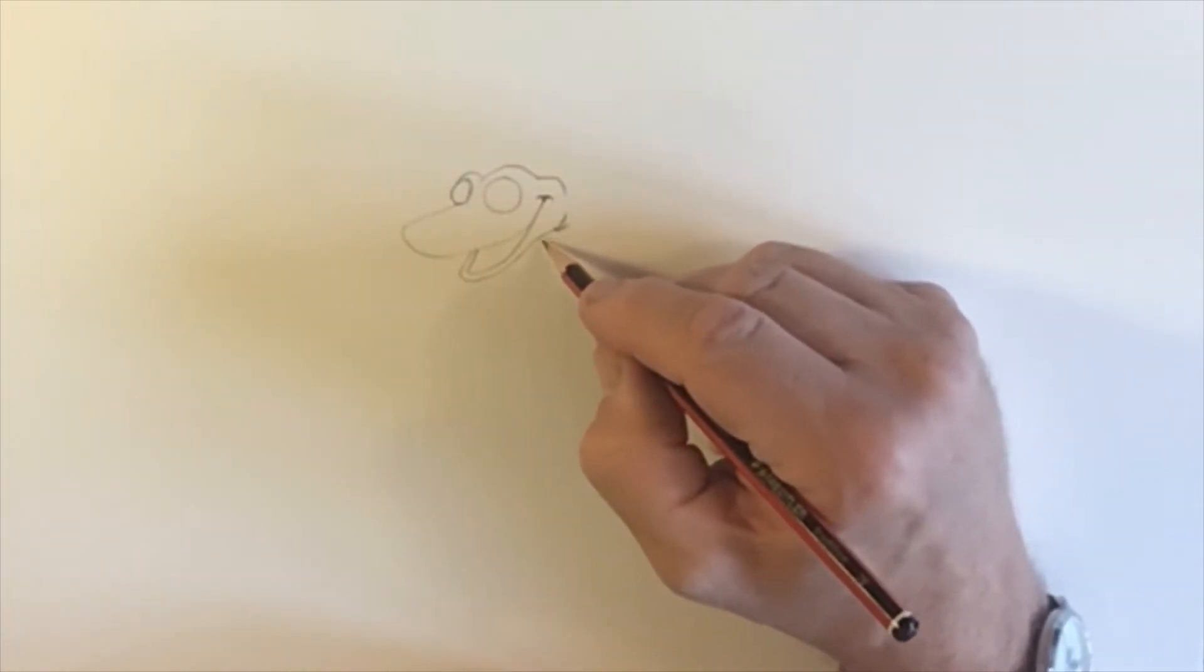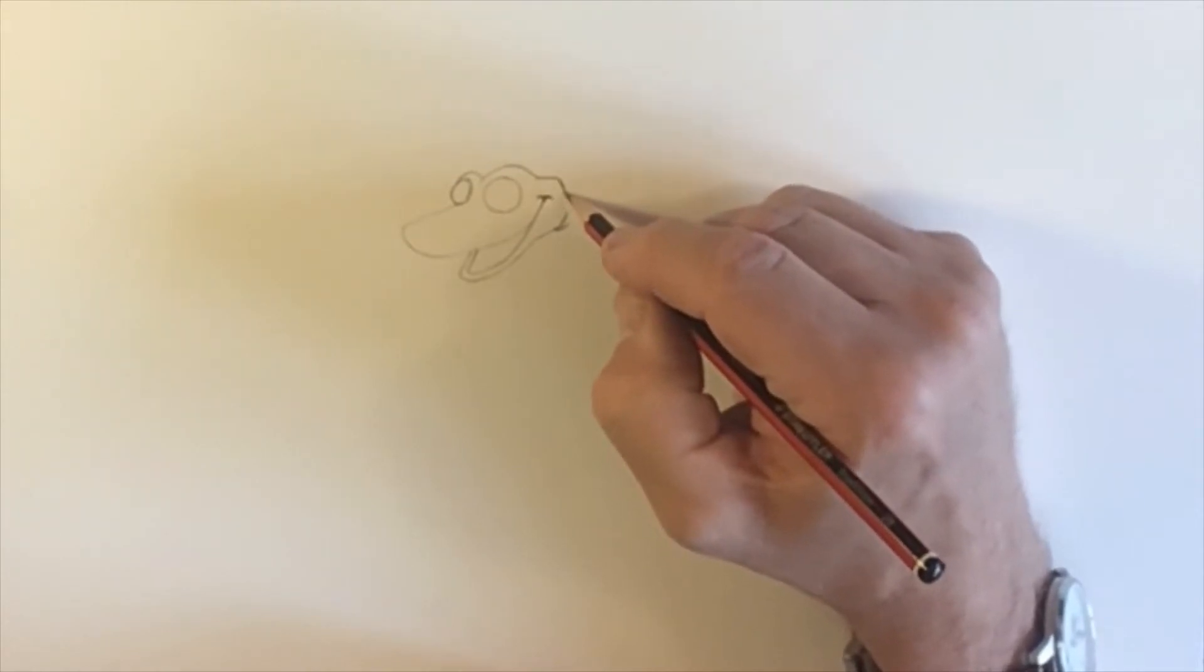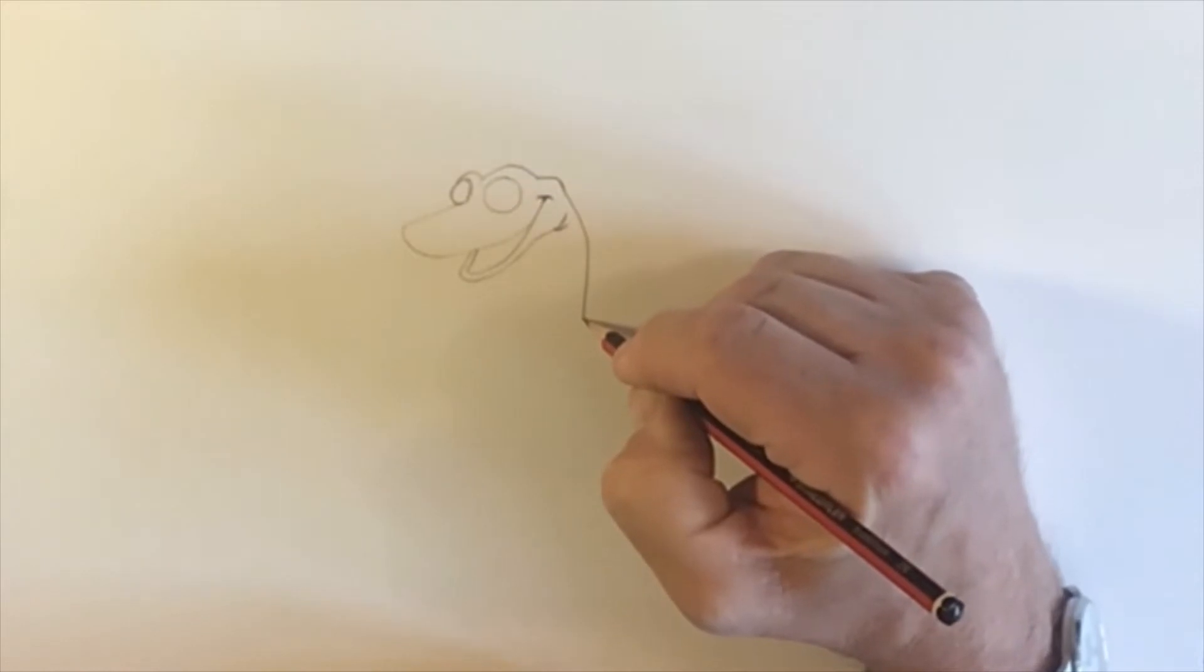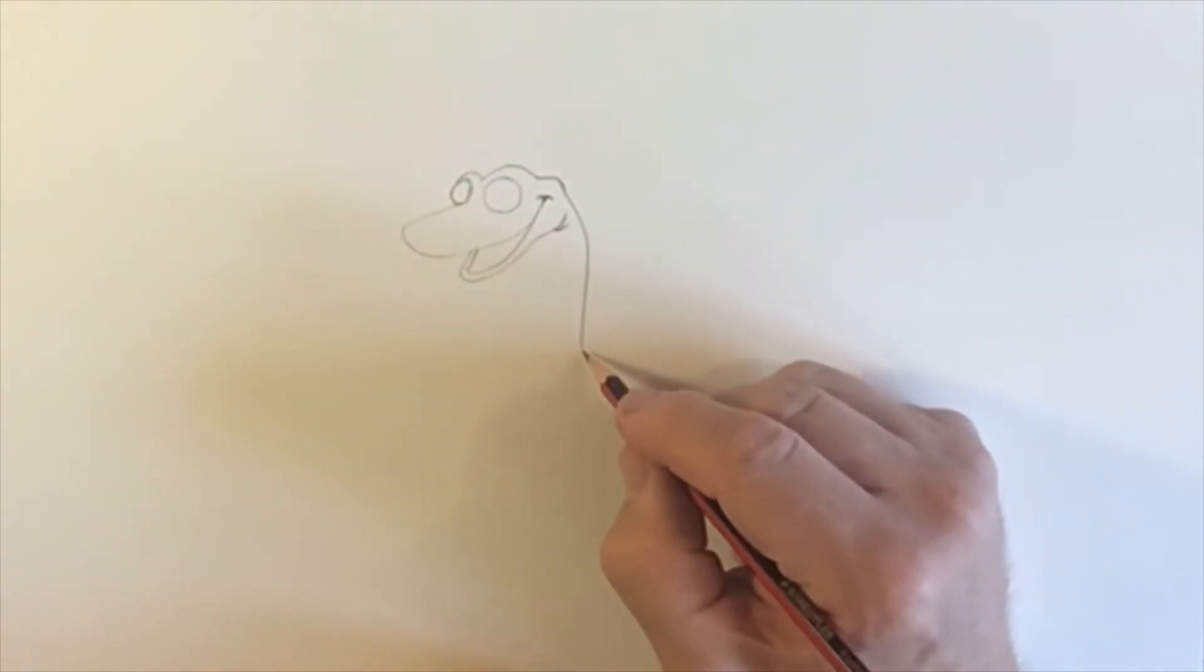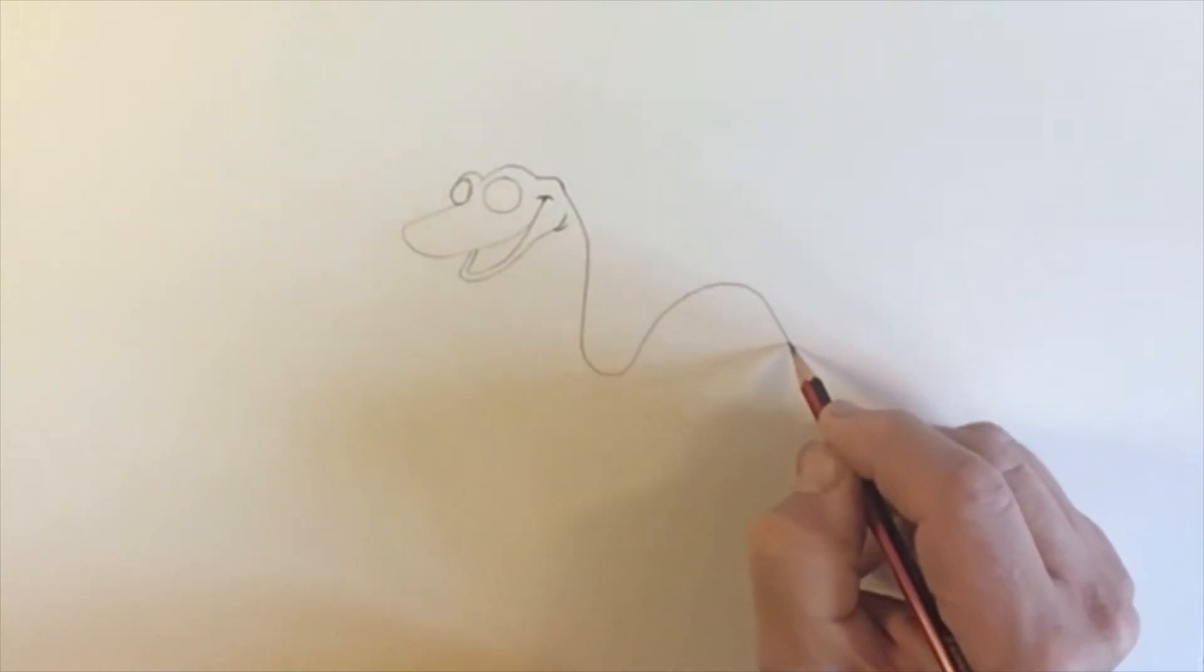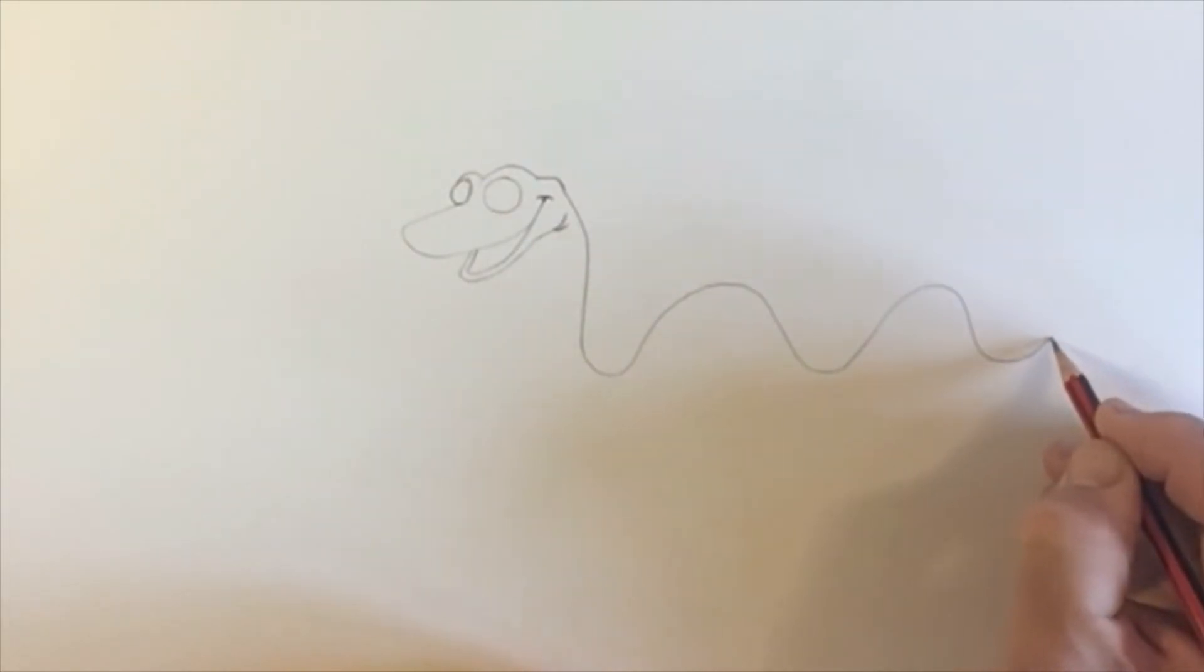Now then, underneath here, well I'll just go back to here. We're going to follow that round, and we're going to have a curved shape. Now the thing about snakes is they're quite smooth, there's nothing angular about them. So I want to do smooth shapes, going up and down and up and down and up.